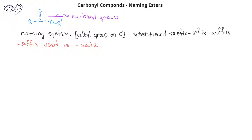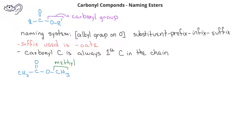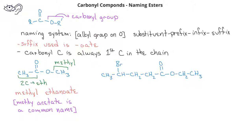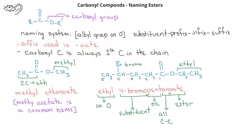As with carboxylic acids and acyl chlorides, the carbonyl carbon is always going to be the first carbon in the carbon chain. In this first example, we see that we have a methyl group on the carboxyl oxygen, and then we have a two-carbon chain which includes the carbonyl carbon. This compound would be named methyl ethanoate. In this second example, we have an ethyl group on the carboxyl oxygen and a bromine substituent on the fourth carbon in a five-carbon chain. The name of this would be ethyl-4-bromopentanoate. Note that there is always a space between the name of the alkyl group on the carboxyl oxygen and the rest of the name of the compound.